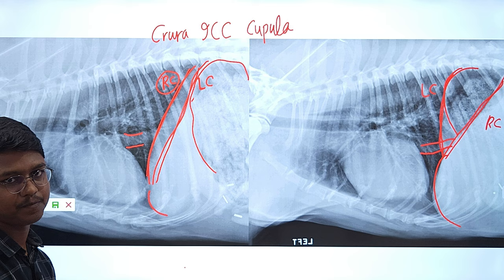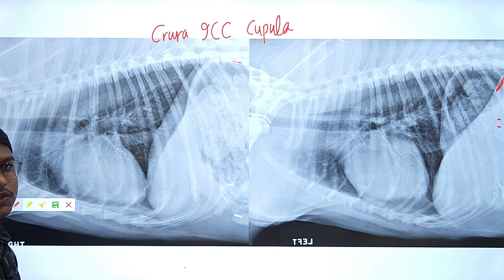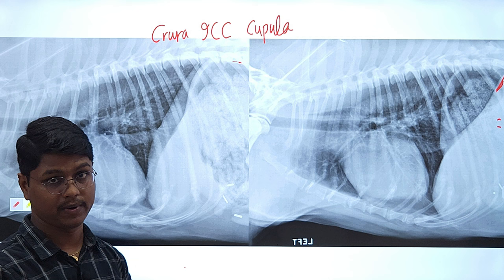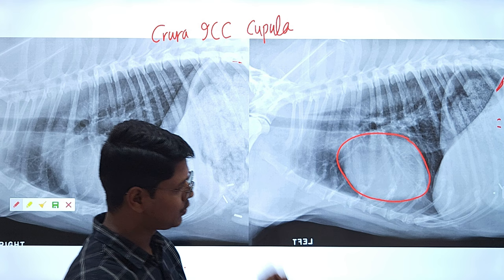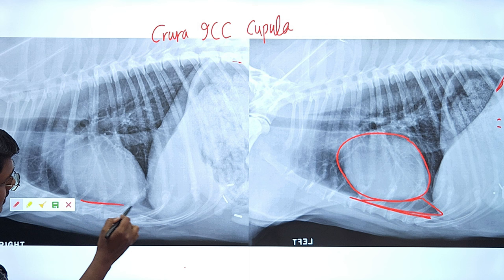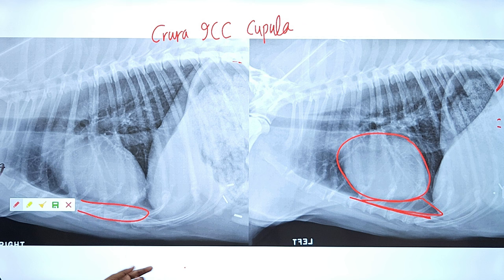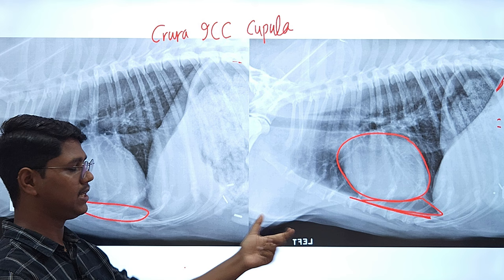Next, one of the most important structures — the heart. You should know the shape of the heart. The shape is more round in case of left lateral, by which you can differentiate. Also you can see it is slightly elevated from the sternum in left lateral — there is a visible gap. But in right lateral, it attaches purely to the sternum with very little or no gap.